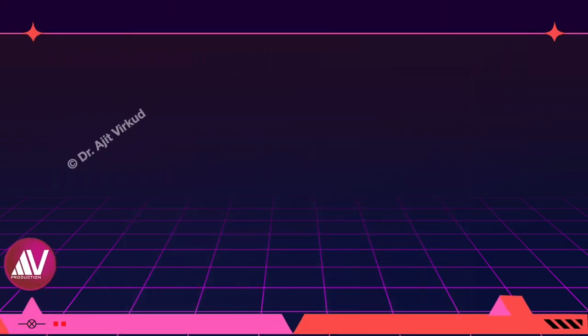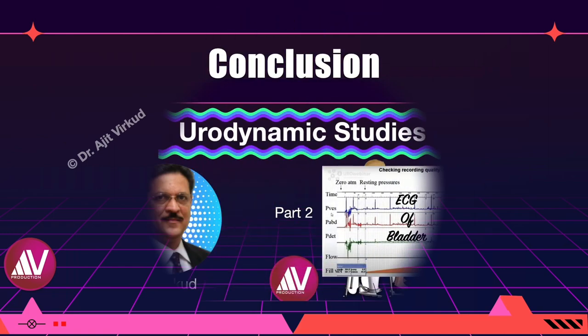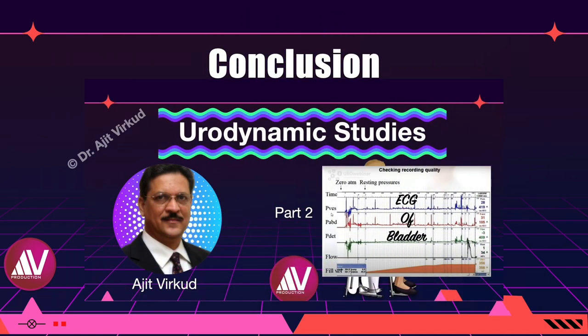This brings me to the end of a very exhausting part of the UDS Masterclass. I hope you have understood most of what I have tried to explain. In the second part, I will discuss the remaining part of standard UDS — that is voiding cystometry — details of Valsalva leak point pressure, EMG recording, and of course video UDS or fluoroscopic UDS including examples of actual cases. The link to this part will be uploaded as and when it is ready, so make sure that you watch it.